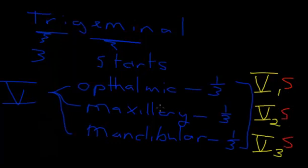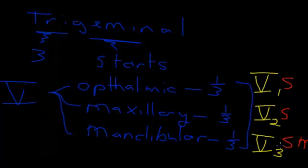It is only the mandibular division of the trigeminal nerve that has an additional, quite critical, motor component to it. So the trigeminal nerve is fundamentally a large sensory cranial nerve with a small amount of motor.